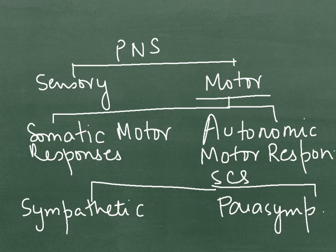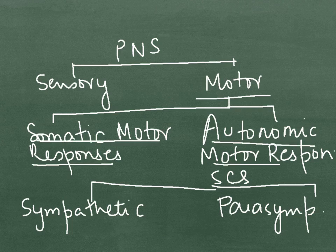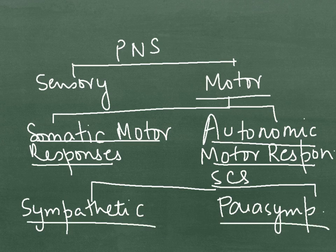The motor unit is further divided into the somatic motor responses and the autonomic motor responses. The autonomic motor responses are further divided into the sympathetic and the parasympathetic responses.